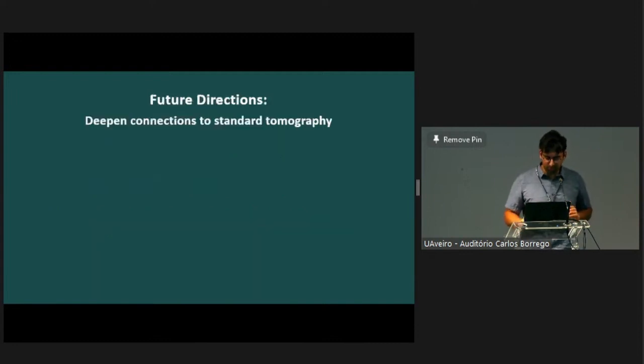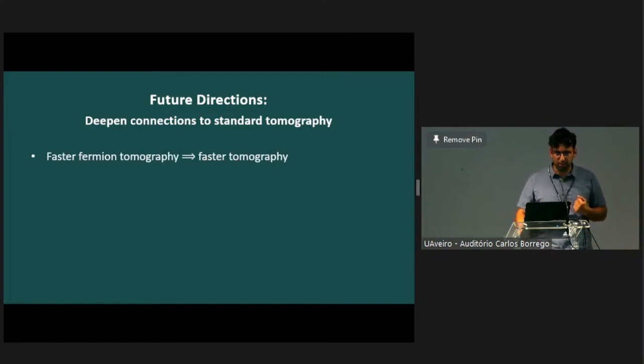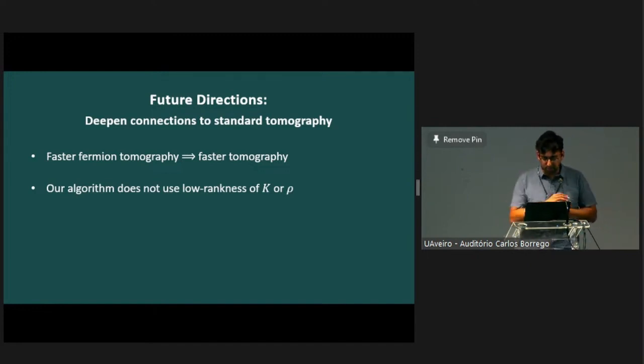The first direction for future work that I want to propose is digging into these connections further. What we've shown is that a fermionic tomography algorithm gives you a state tomography algorithm, or at least in our case, it does. If you optimize our algorithm further, you should get faster tomography algorithms. I think there are a number of places in the analysis and the algorithm where you can speed things up or tighten things. Maybe the lowest hanging fruit among these is the fact that our algorithm does not use the low rankness of the matrices we want to reconstruct. For the fermionic case, we know that our matrix K has rank n, and we don't use that at all. You should be able to exploit that structure to get speed ups.